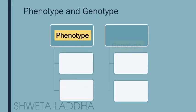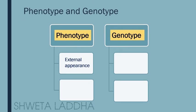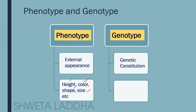Let us now see what are phenotypes and what is a genotype. Phenotype can be defined as the external physical appearance — how an organism appears physically. Genotype means its genetic constitution. Examples of phenotype include the height of the plant, color of the seed, shape of the seed, size of the seed, size of the pod, and shape of the pod — these are all external physical appearances.